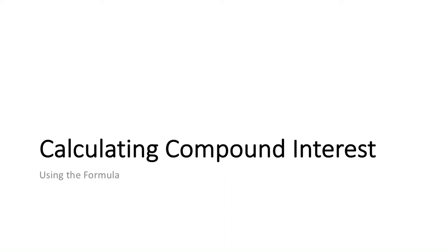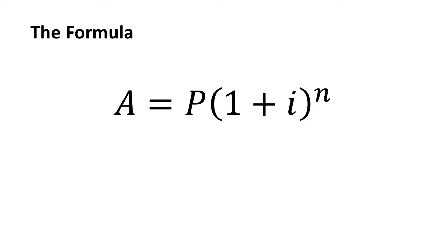This video is going to look at calculating compound interest using the compound interest formula. The compound interest formula is A equals P in brackets, 1 plus I, to the power of N.